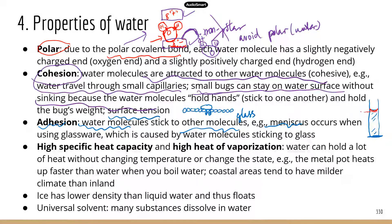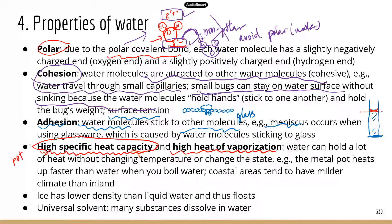When you read the liquid volume, you have to use the bottom line — that's the correct reading. Next is high specific heat capacity and high heat of vaporization, which are very similar. This refers to the ability of water to hold a lot of heat without changing temperature. When you heat water in a metal pot, the metal pot has a very low heat capacity, so with the same amount of heat the metal pot heats up very quickly, but it takes water much longer to heat up.